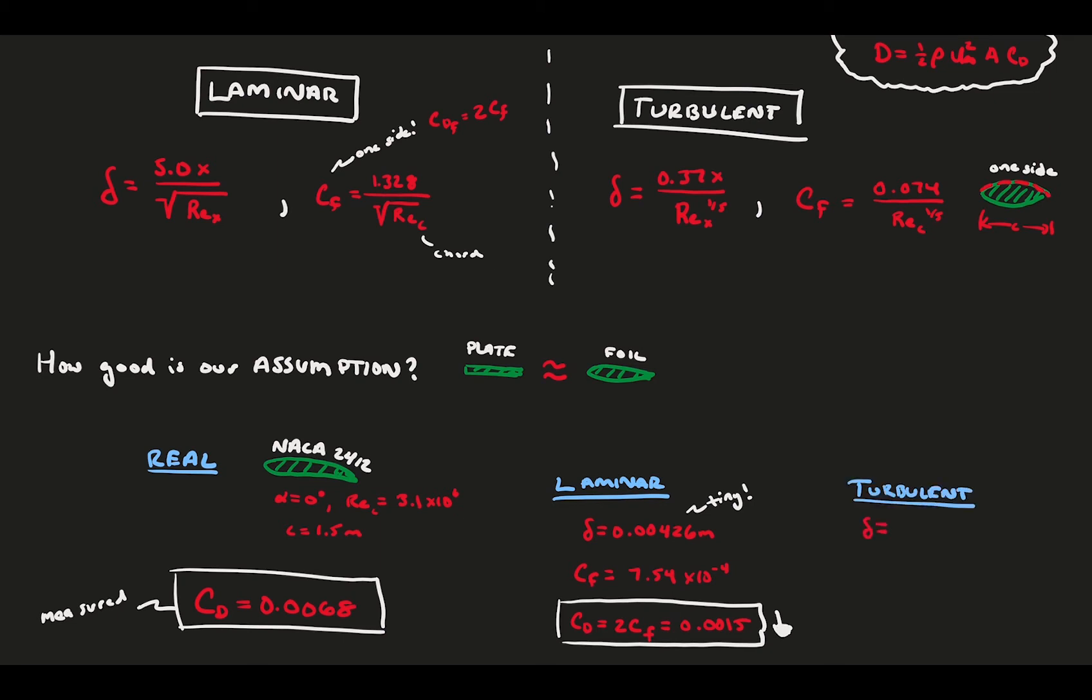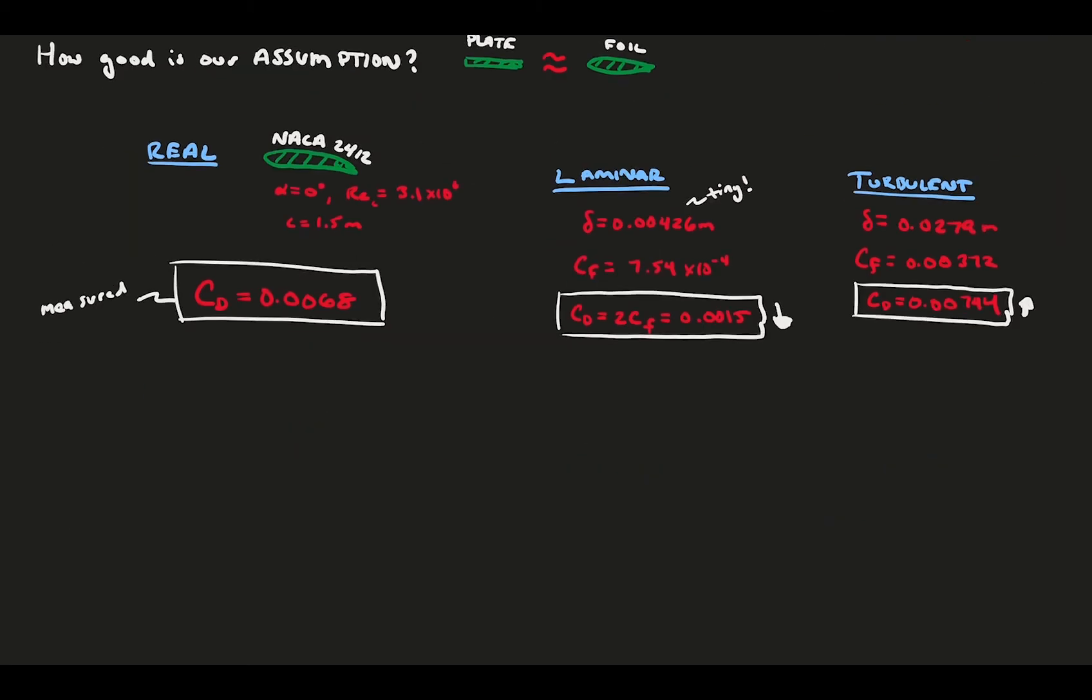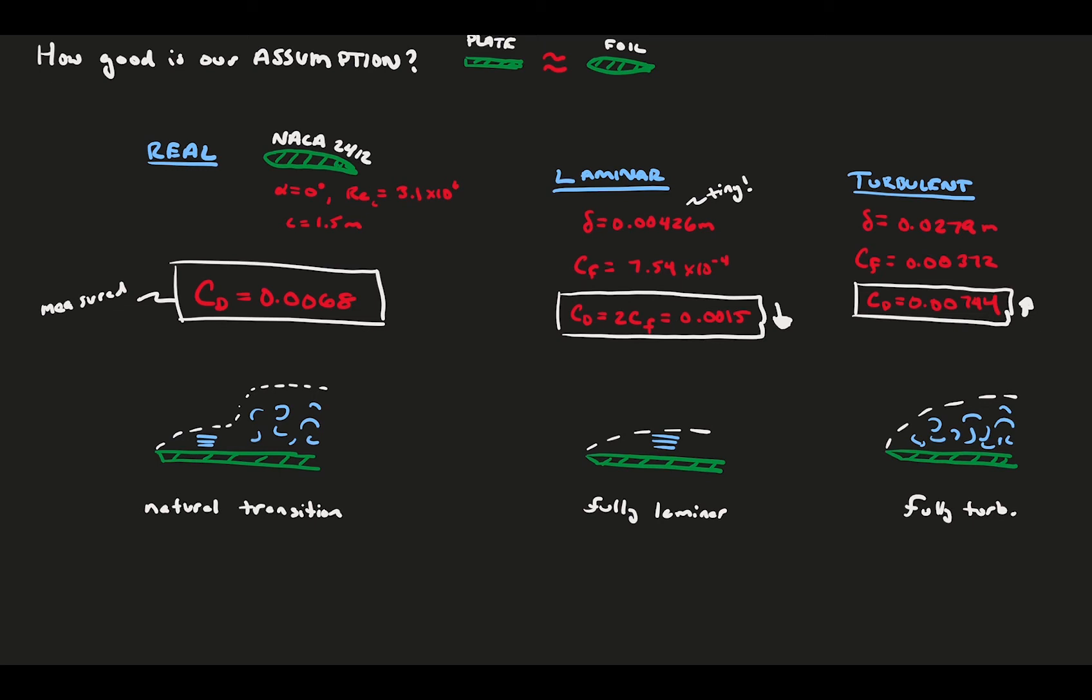Also, we would significantly under-predict the drag coefficient. For an entirely turbulent boundary layer, we'd get a little bit thicker boundary layer height at the back of the foil, and we would over-predict the drag coefficient by a bit. The laminar and turbulent assessments both assume that the flow from the beginning is either laminar or turbulent entirely. In reality, the flow naturally transitions from laminar to turbulence.